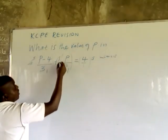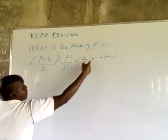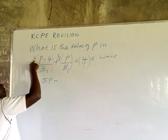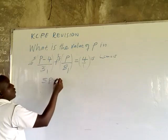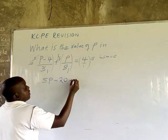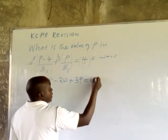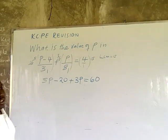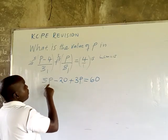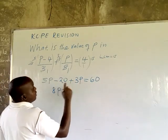15 divided by 3 is 5, so we get 5 times P minus 4, which gives 5P minus 20. Then 15 divided by 5 is 3, so we get 3 times P, which is 3P. So we have 5P minus 20 plus 3P.